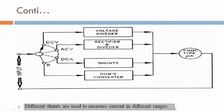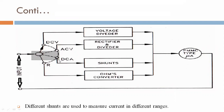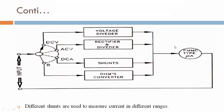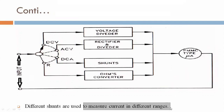Different shunts are used to measure current in different ranges. The current input at the DC ampere terminal goes through the shunt block and then to the PMMC type meter. To measure current in different ranges, the shunt provides the appropriate range, allowing us to measure current accurately.